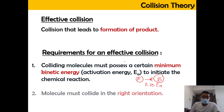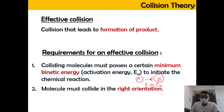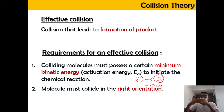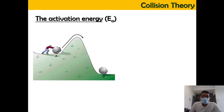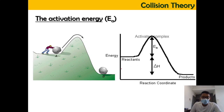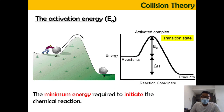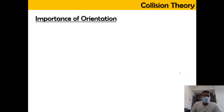Only then is it called an effective collision. Second, the molecules must collide in the correct orientation. Activation energy is the energy needed by the reactant particles in order to initiate a chemical reaction and form product. A reactant will pass through an activation barrier to form an activated complex, which then drops in energy to form product.